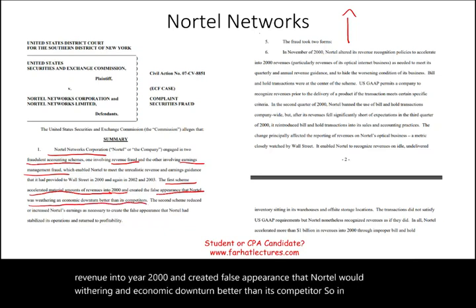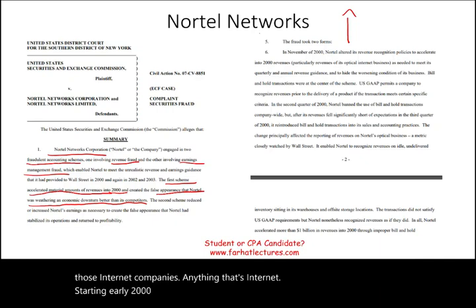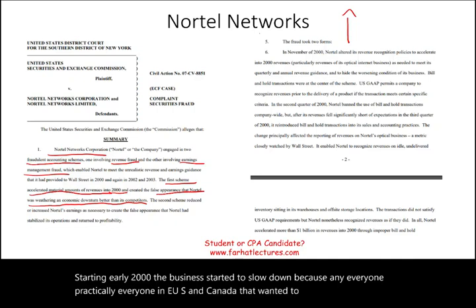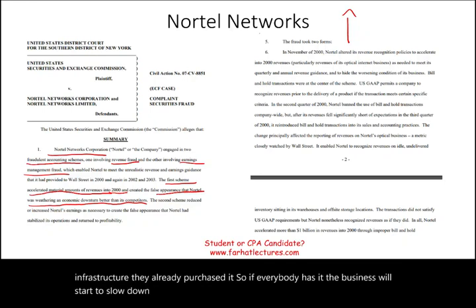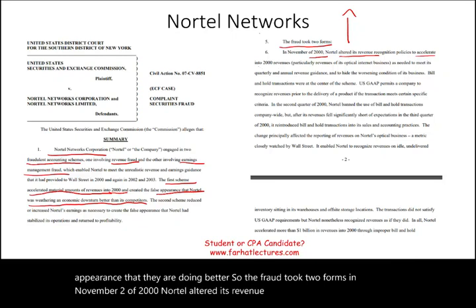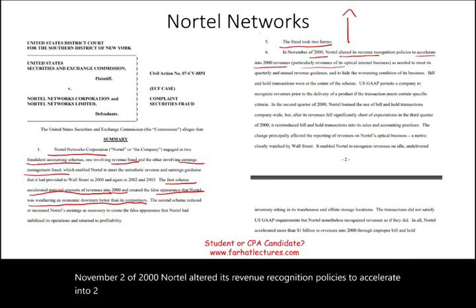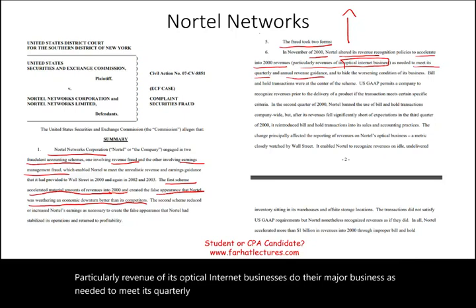In 2000, all those internet companies started to slow down because practically everyone in the US and Canada who wanted internet infrastructure had already purchased it. But Nortel Networks found a way to create a false appearance that they were doing better. In November of 2000, Nortel altered its revenue recognition policies to accelerate revenue — particularly for its optical internet businesses — as needed to meet its quarterly and annual revenue guidance and to hide the worsening condition of its business.